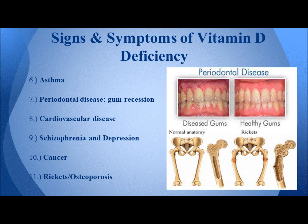The sixth sign is asthma. After that, periodontal disease, which is basically gum recession such as the one shown in the picture. As well as a group of cardiovascular diseases. The mental signs related to vitamin D deficiency are schizophrenia along with depression. Lastly, there are cancers in all its types and rickets/osteoporosis, which are bone weaknesses shown in the top picture.